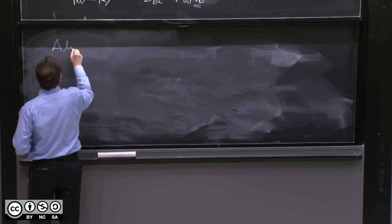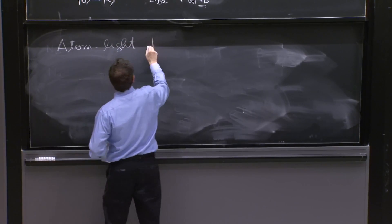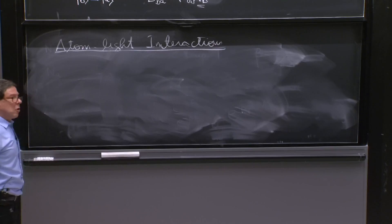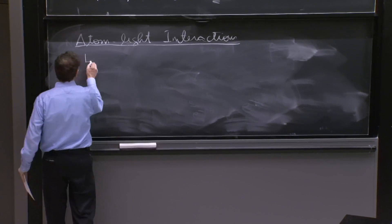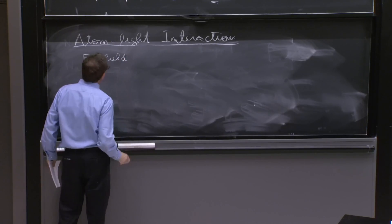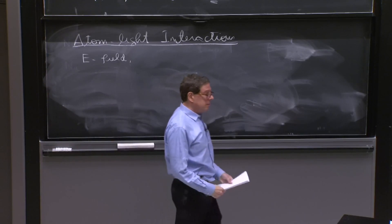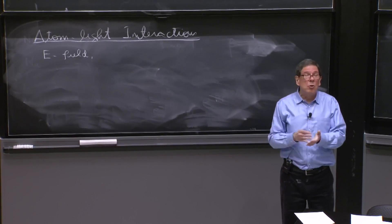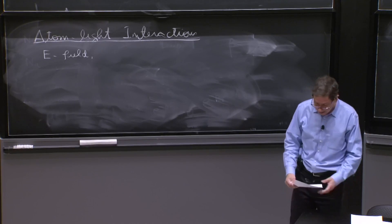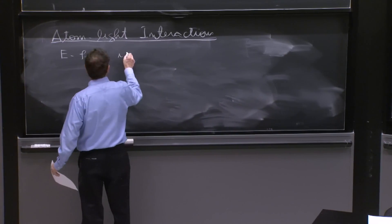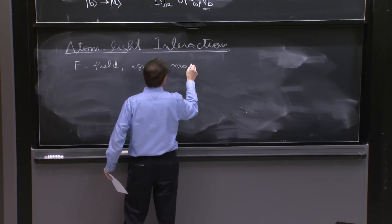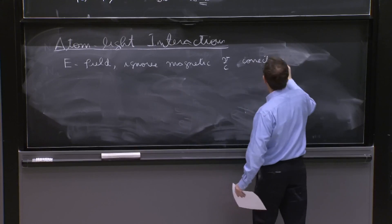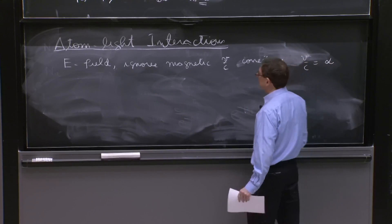Atom-light interactions. We will focus just on the electric field, the E field. Magnetic field effects are suppressed by the velocity of the electrons divided by c, which is the fine structure constant. So magnetic field effects are suppressed. We ignore magnetic v/c corrections, with v/c of the order of the fine structure constant.